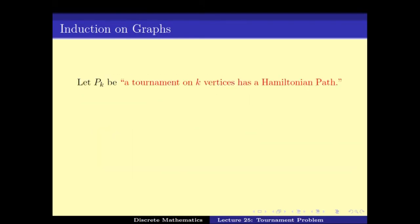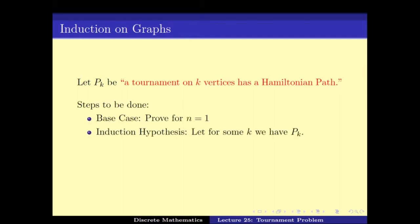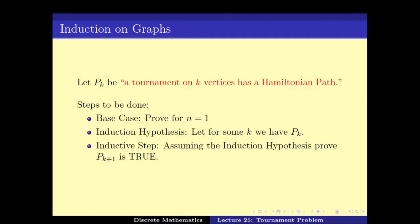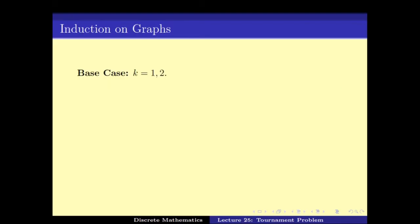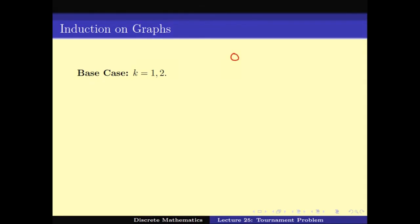For the base case: K=1 has only one vertex, which doesn't make much sense. For K=2, we have two vertices and there is an edge from one to the other, so there is a Hamiltonian path — just number them 1 and 2. The base cases are pretty easy. The induction hypothesis says that for some K, P(K) is true, and using that we have to prove P(K+1).